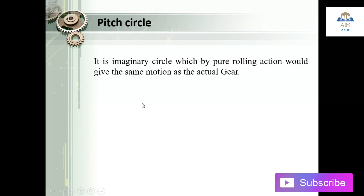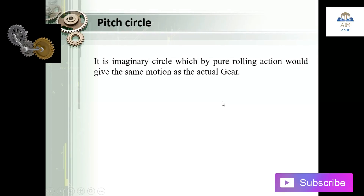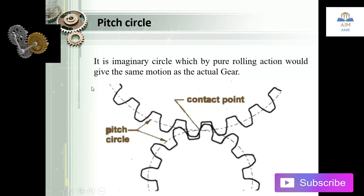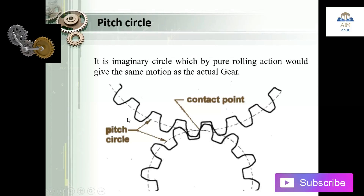The first term is the pitch circle. The pitch circle is the imaginary circle which, by pure rolling action, would give the same motion as the actual gear. The pitch circle is shown here by the dotted lines, and one contact point is shown as well.